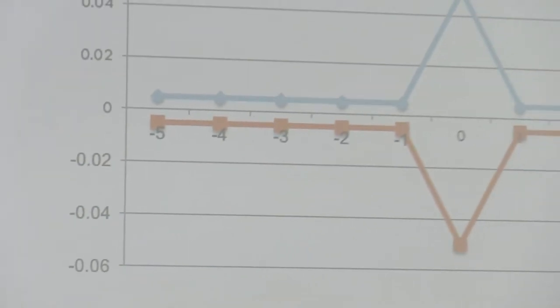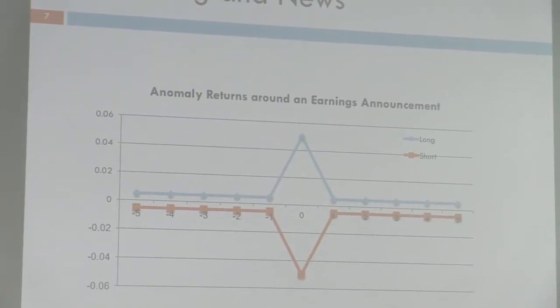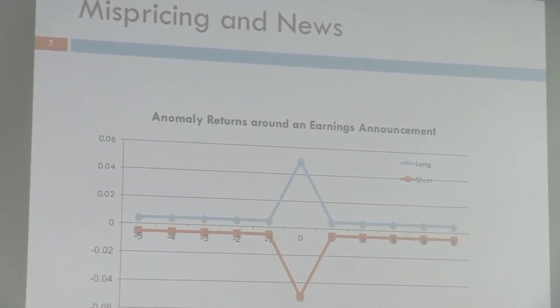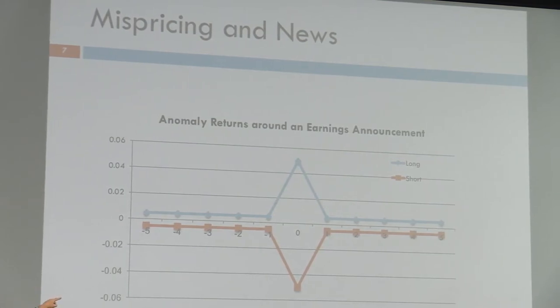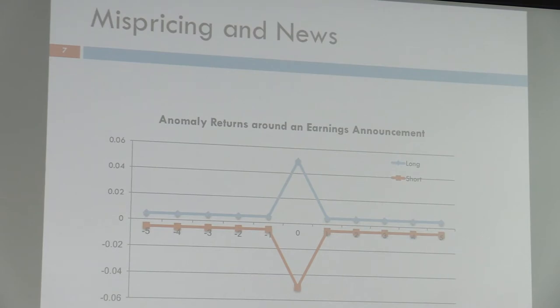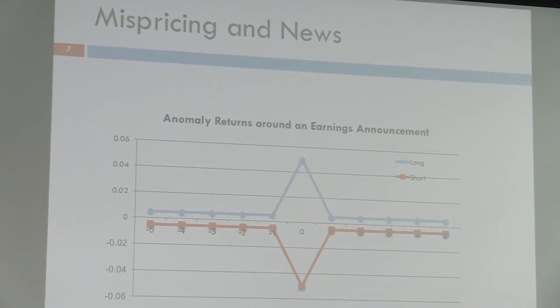This story makes a very different prediction about what should happen around an earnings announcement or a news day. If I have a stock that an anomaly strategy says to buy — the blue line — investors' expectations were too low for that stock. When it announces earnings, investors are pleasantly surprised, the stock price jumps up, and that explains the anomaly returns. Or for some stocks investors were too optimistic — the orange line — and when new information comes out, investors realize they were wrong and you get low returns. Basically, if you form portfolios on an anomaly strategy, the portfolios are really only going to make you money on days when there's an earnings announcement or other news. The risk story says the portfolio should do the same on every day — very different empirical predictions.